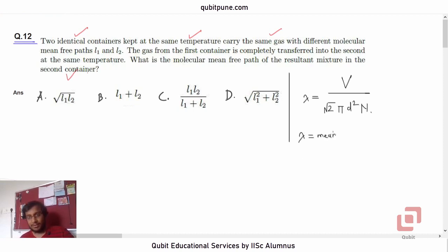Lambda is the mean-free path. V is the volume of the container in which that gas is present.